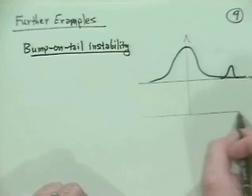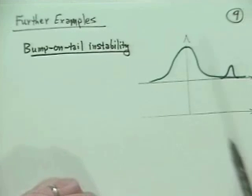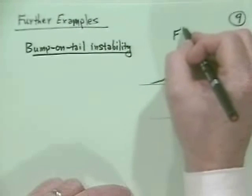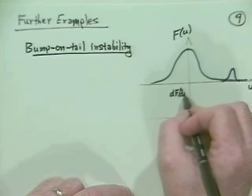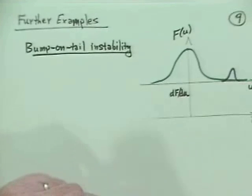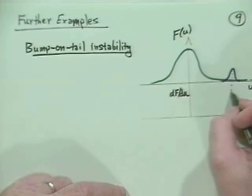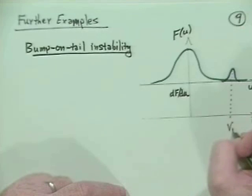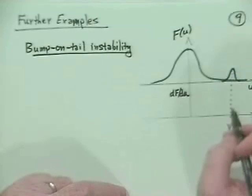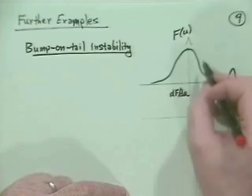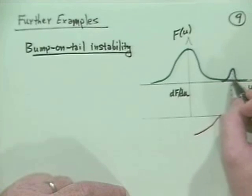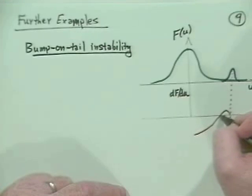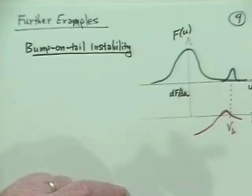So this is F of U, the distribution function as a function of U. If I now plot dF/dU, what you find is that if I bring this point down here — we'll call that the beam velocity point — the distribution function in this region has a negative derivative. However, in some little region just before that, it has a positive derivative, and then goes back to negative.